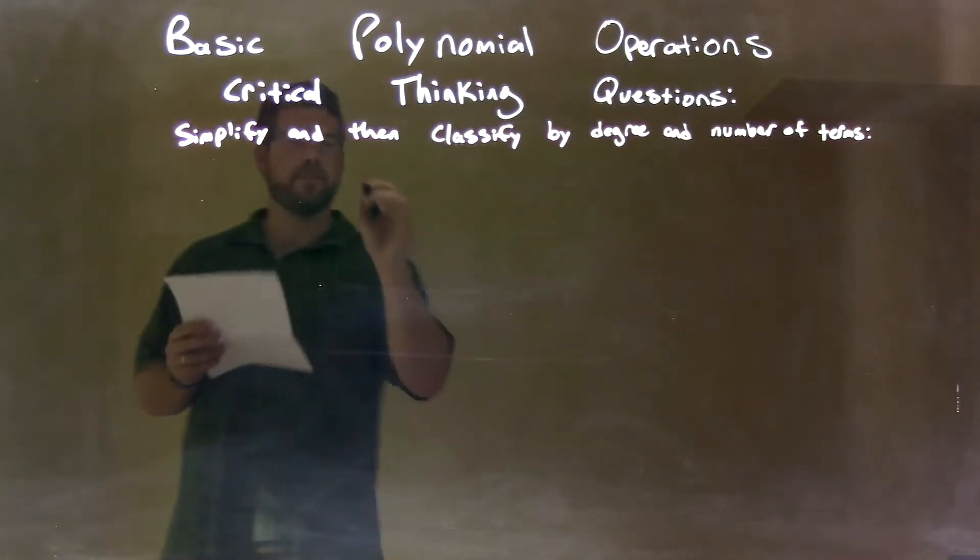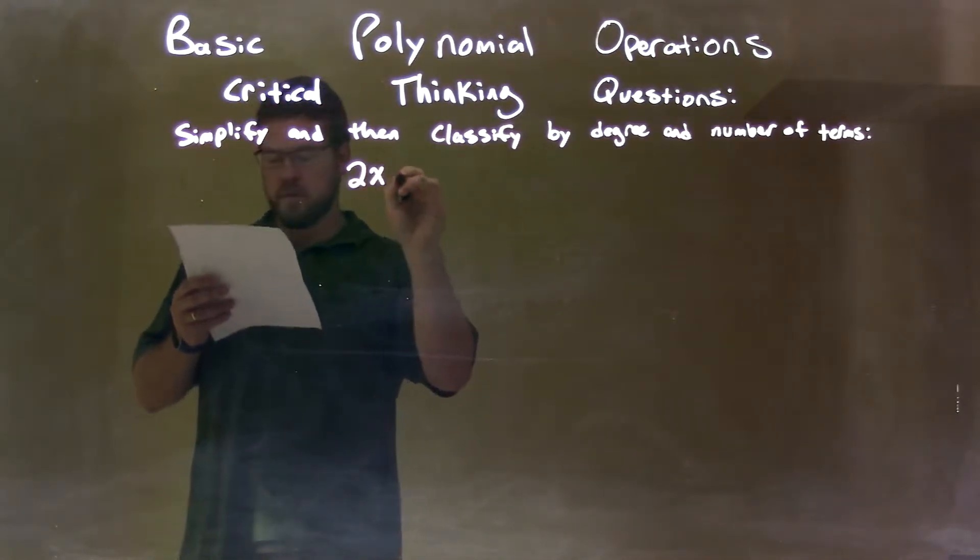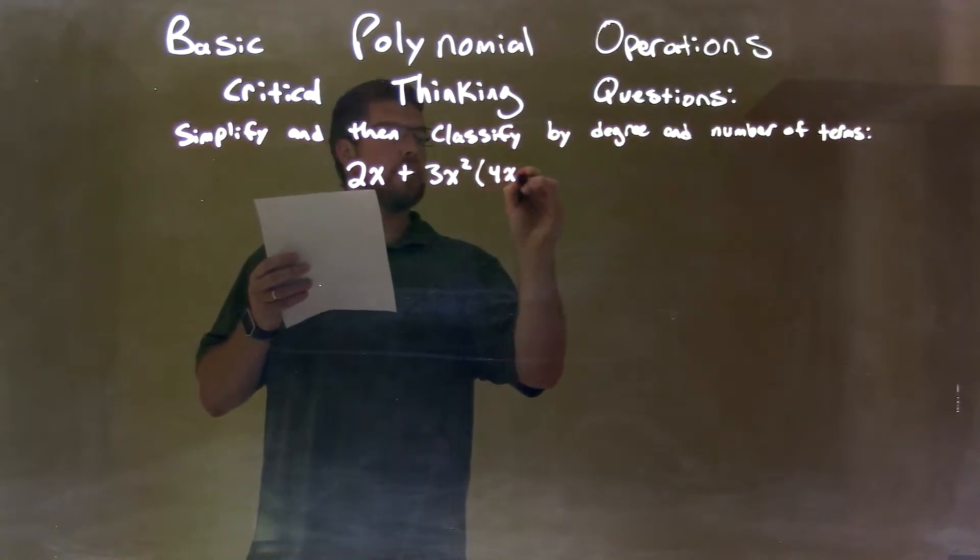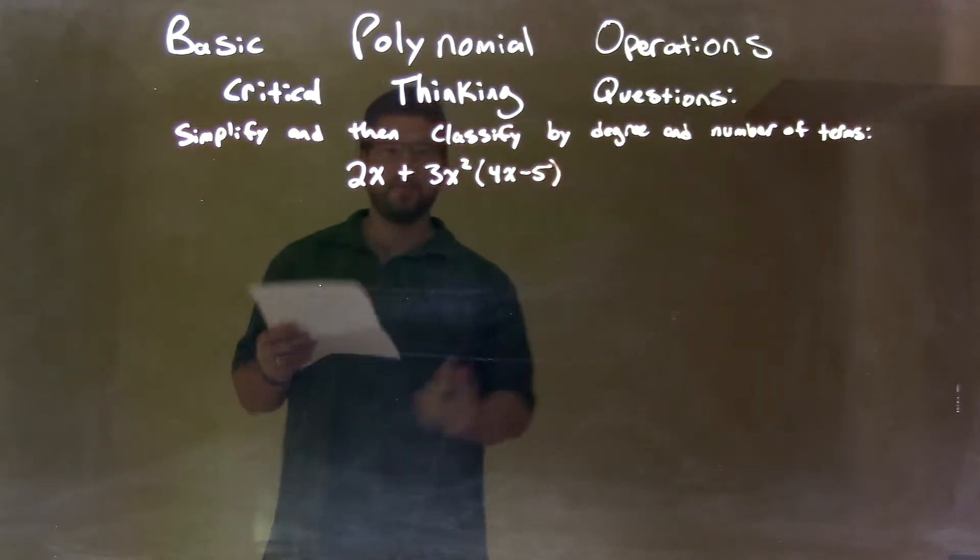And they give us this: 2x plus 3x squared times 4x minus 5.